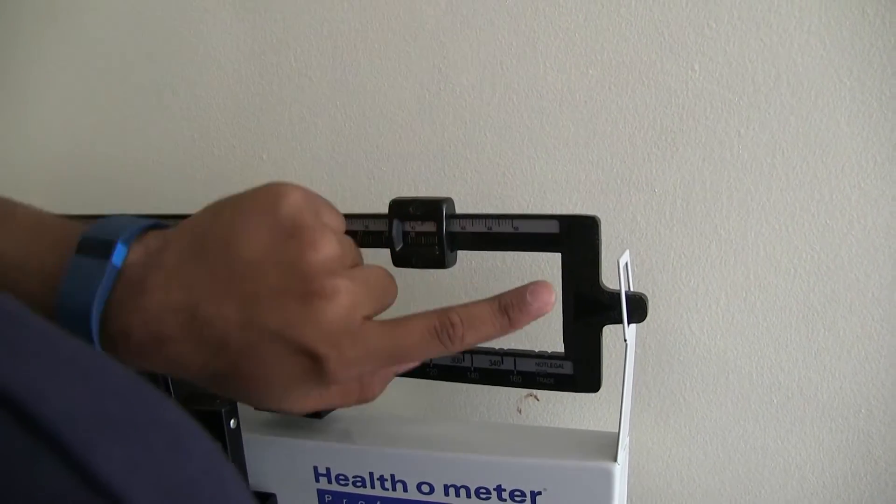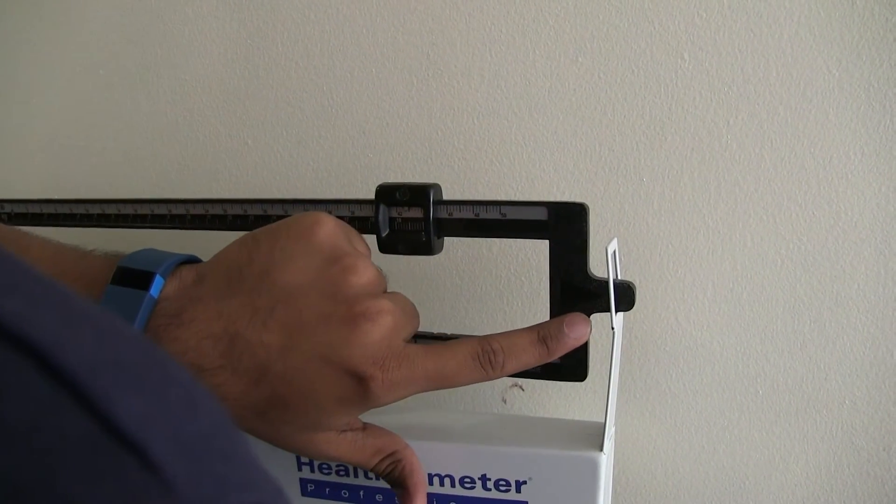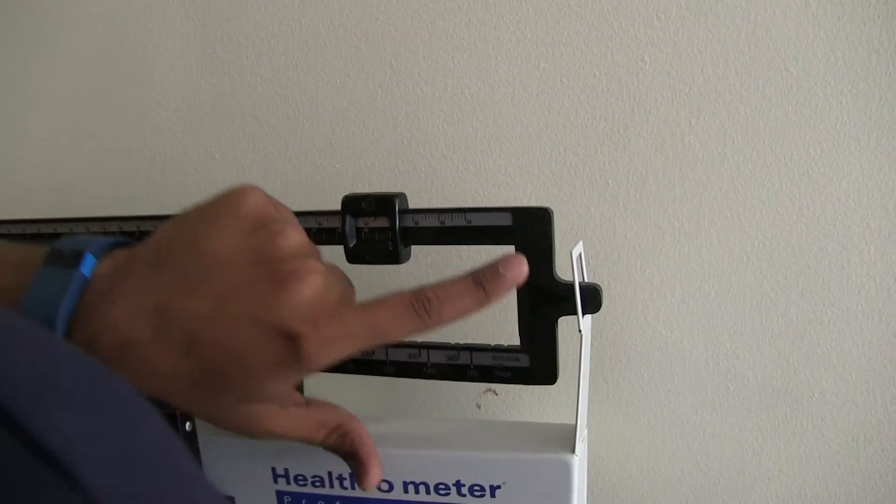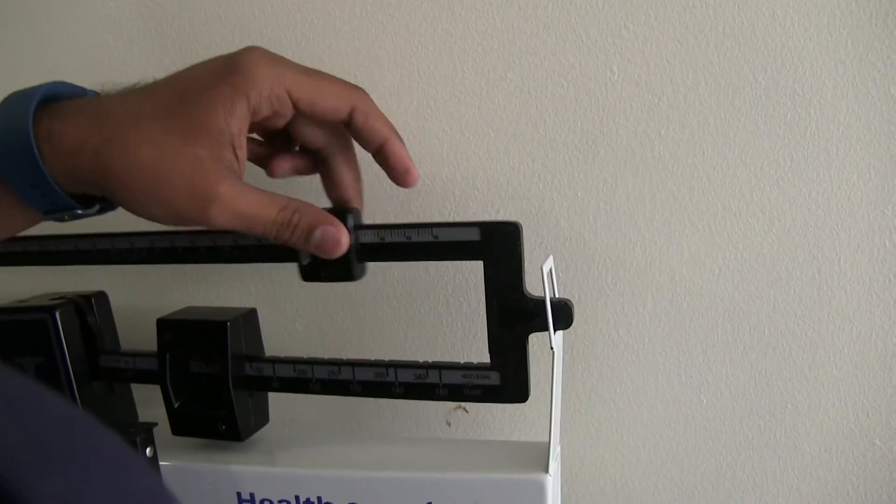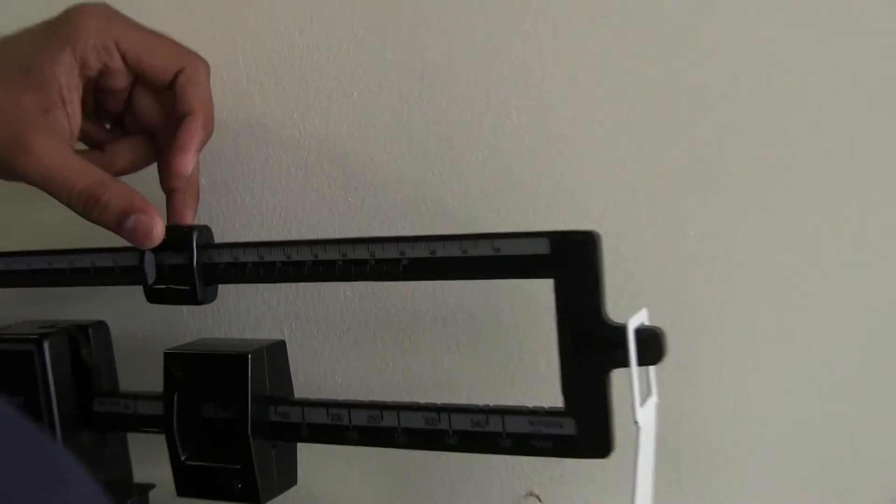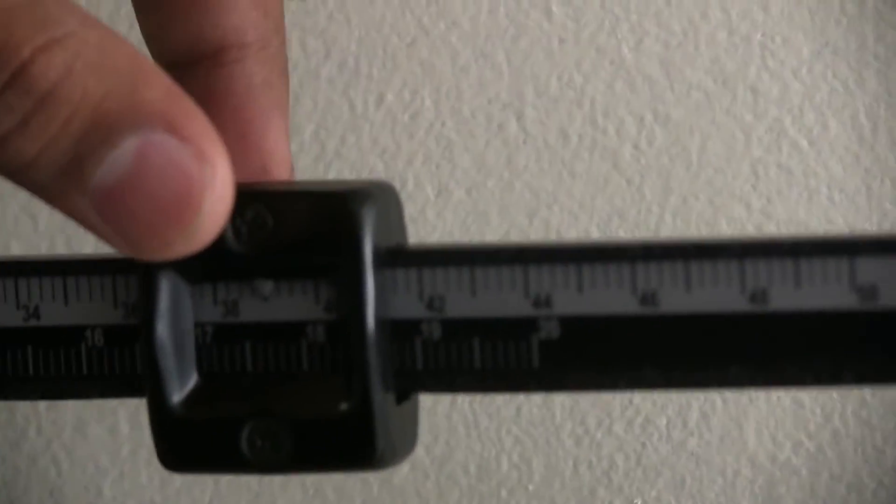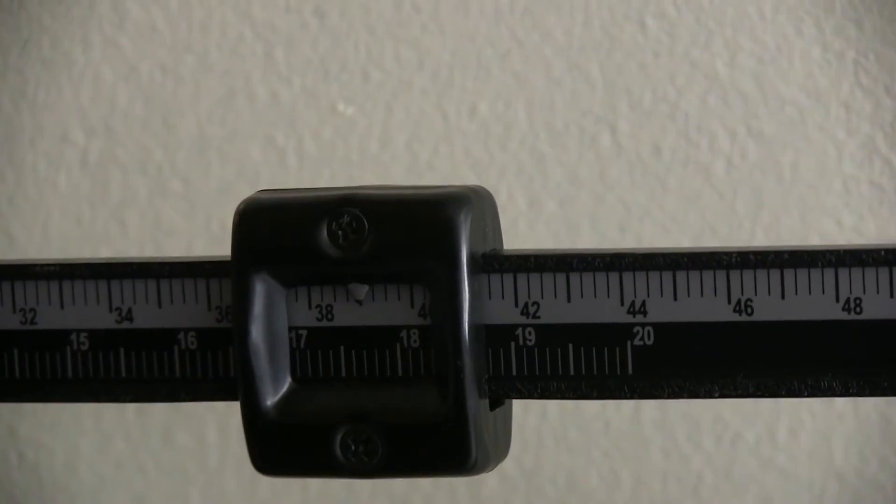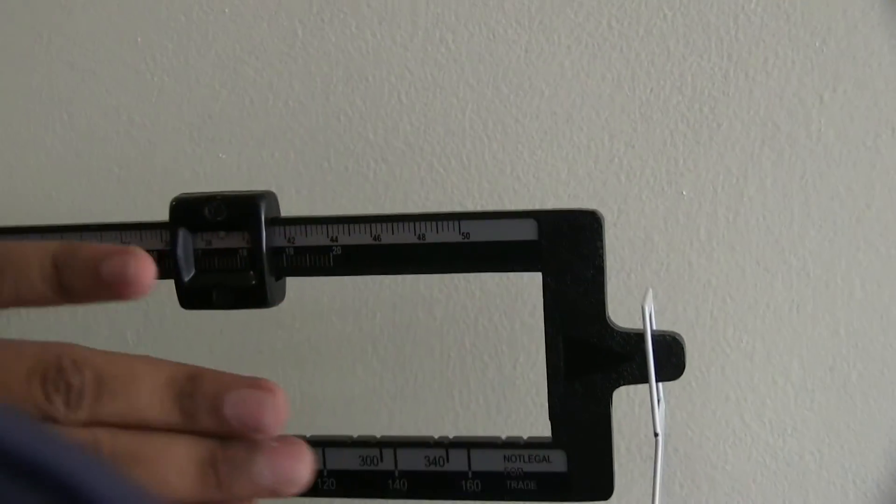Whenever the scale is at the bottom over here, it means that the weight, I'm at a higher number than their weight and then if it's on the top, that means I'm at a lower number than there. So I just like to move it around slowly to get to a number where it's approximately in the middle.